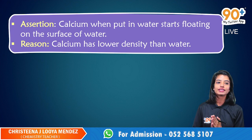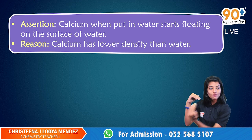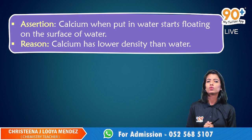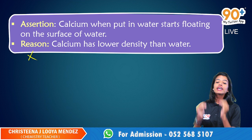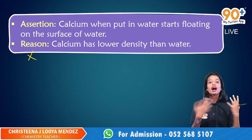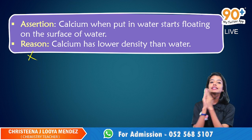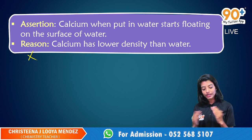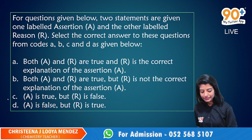Assertion: Calcium, when put in water, starts floating on the surface of water. We already saw the beautiful animation in our class — calcium will float over the surface of water. Assertion is correct. And the reason: Calcium has low density than water. That is not the correct reason — reason is incorrect. The correct reason is that when calcium reacts with water, it produces calcium hydroxide and hydrogen gas. The hydrogen gas acts like a life jacket, covering the surface of the calcium, which helps it float over the surface of water. So the given reason is incorrect; assertion is correct. Assertion is true but the reason is false, which is option C.